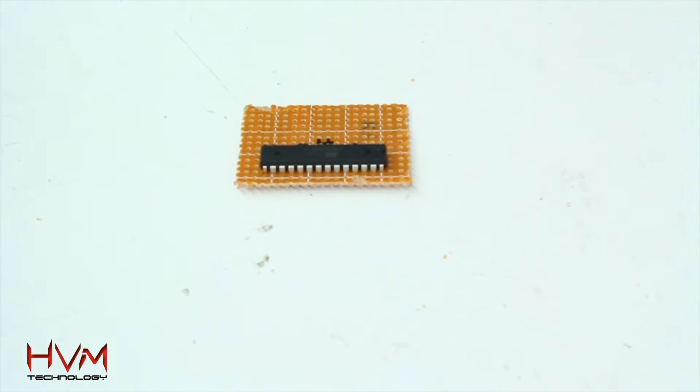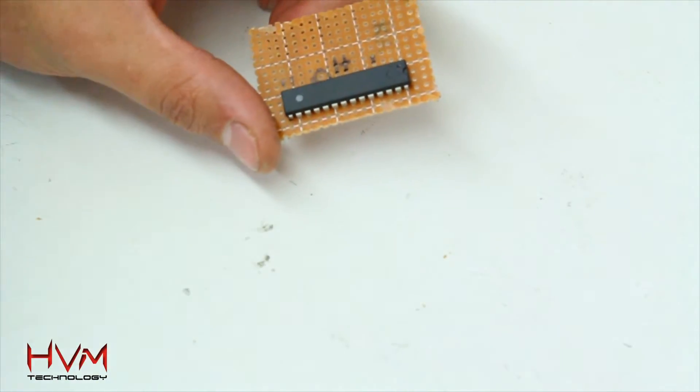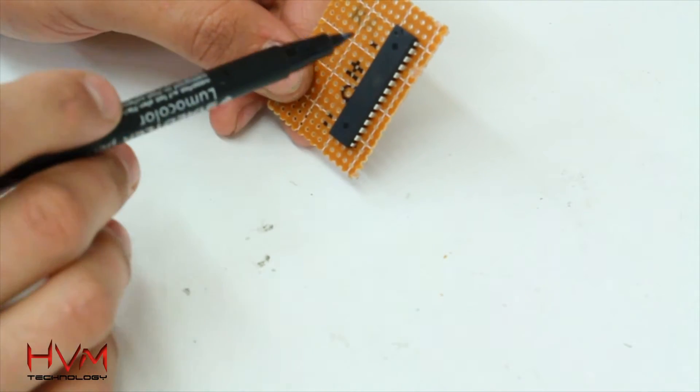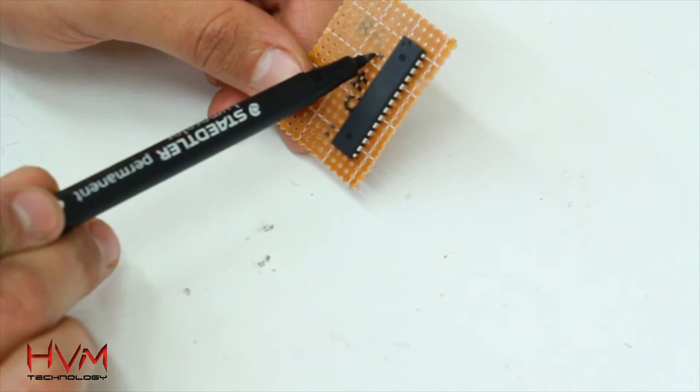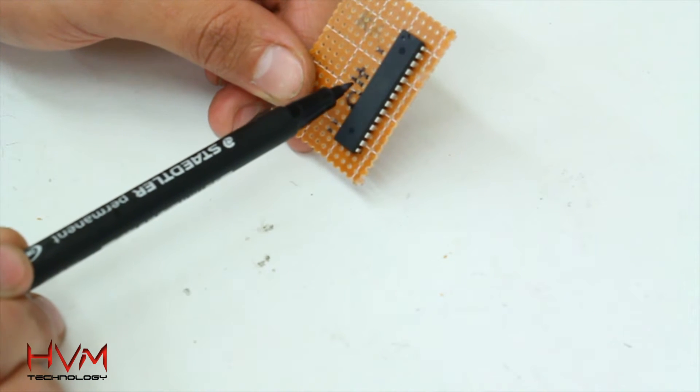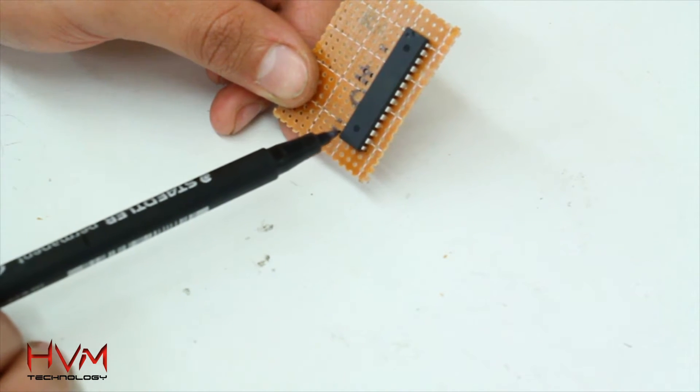So I've just got the ATmega328P mounted on the piece of protoboard. I've also marked out the pins that I'm going to be using: digital 2, the power, the ground, the crystal, and pin 7 and pin 8.